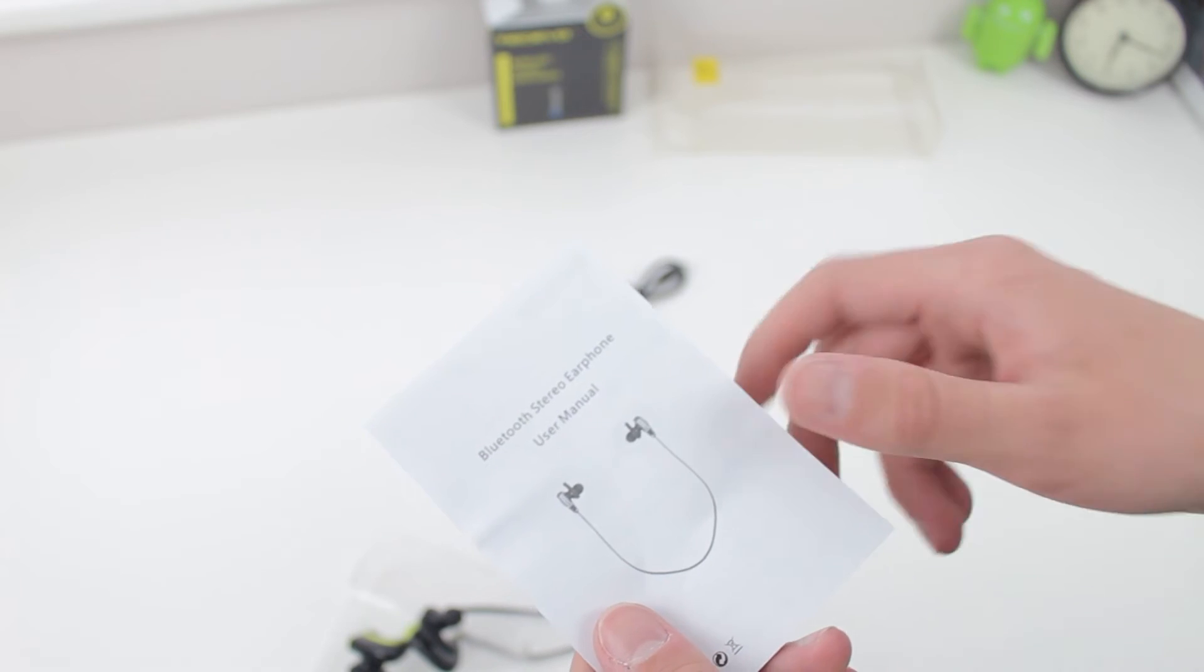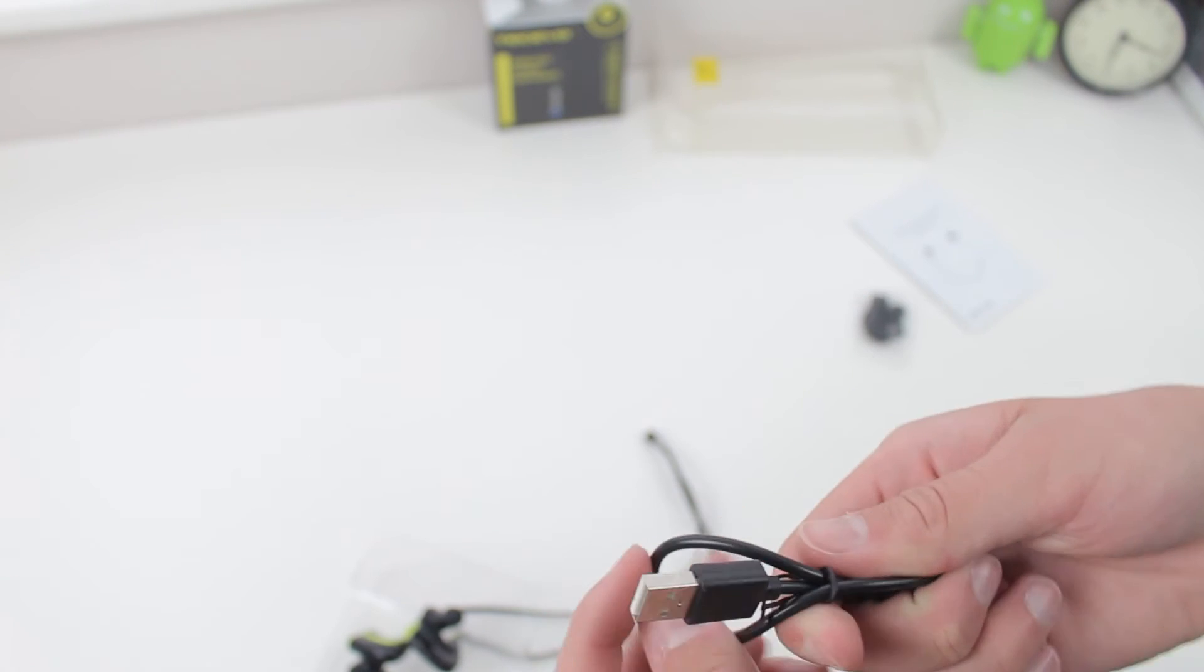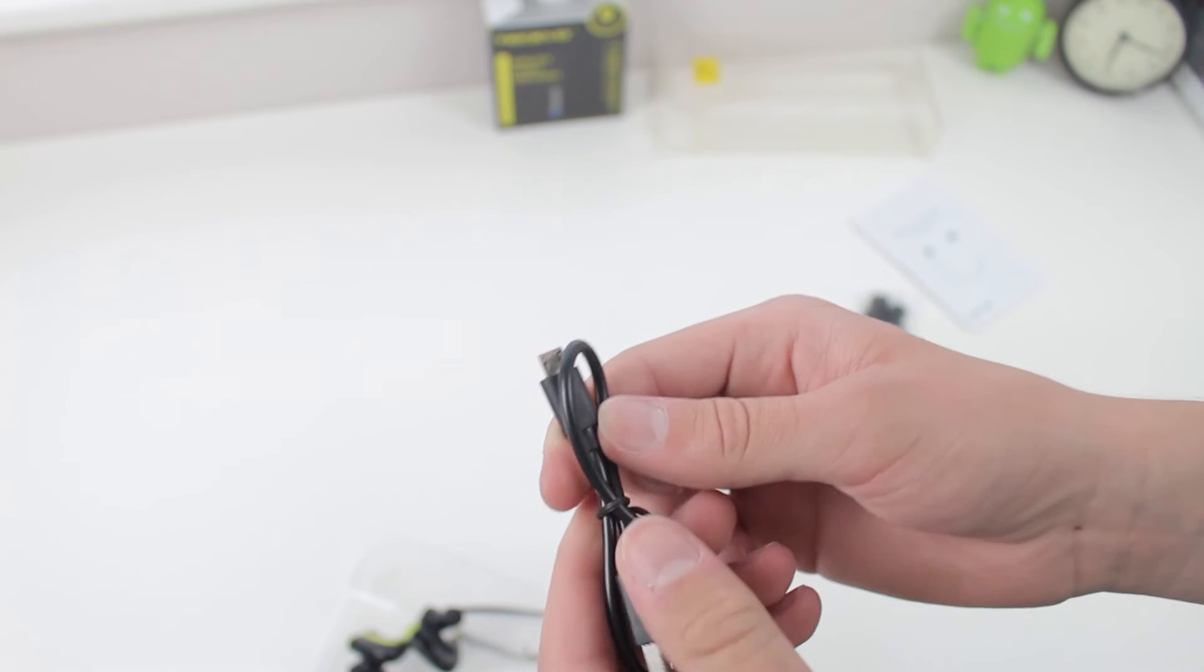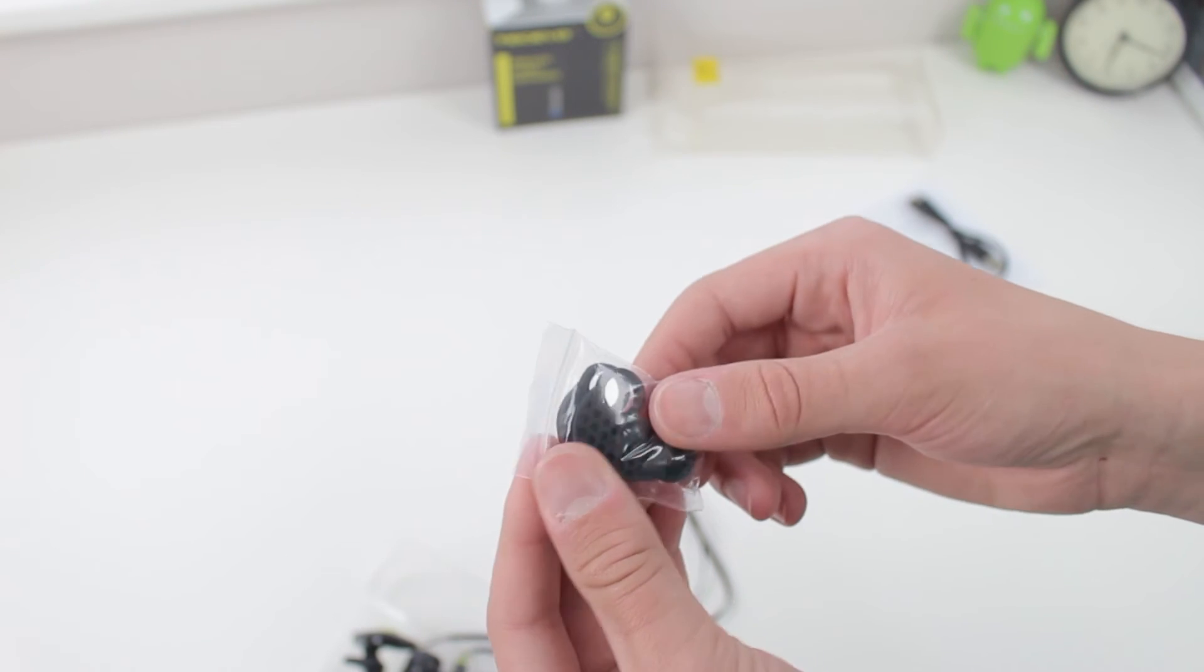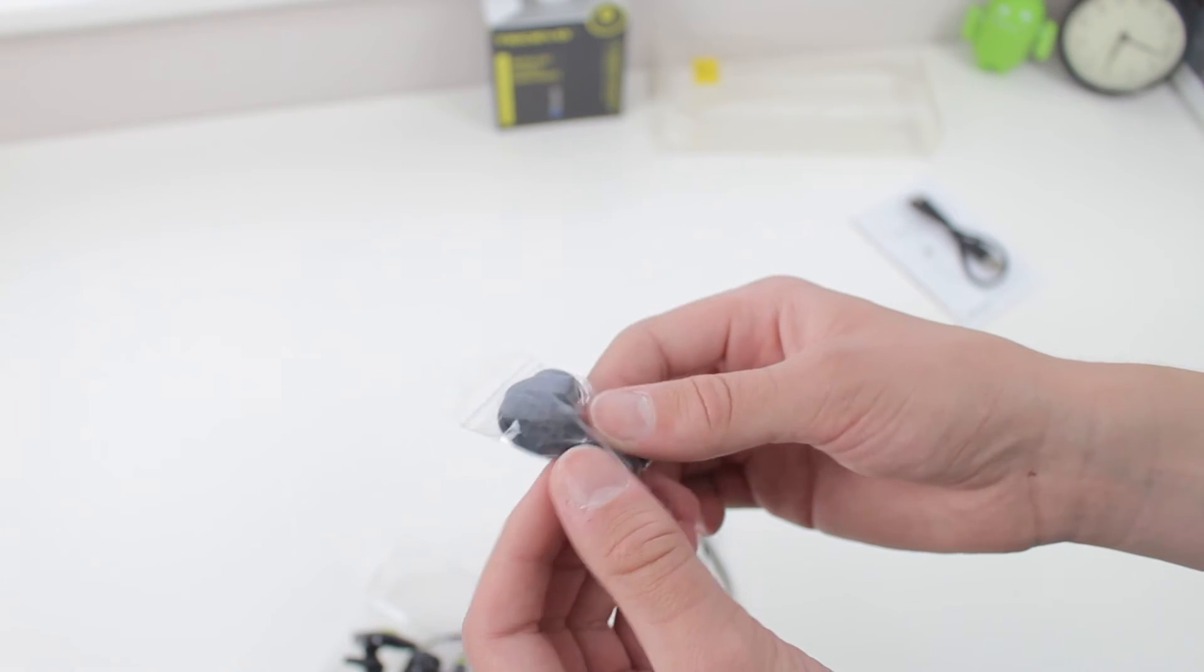Inside the box we also get a Bluetooth stereo earphones manual which is nice to see, and we'll also get a full size USB to micro USB cable that's going to charge up those earphones. Also included are some extra tips so you can customize the earphones to fit your ear, which is a really nice addition.